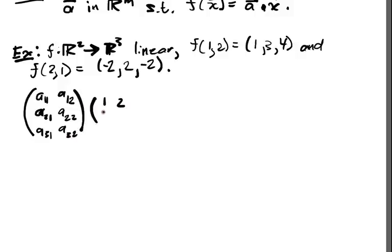times (1,2) and (2,1), I know that this is equal to, right, I'm just putting all these things into columns now, (1,3,4) and (-2,2,-2).